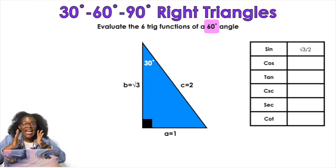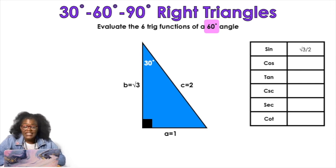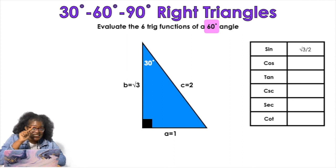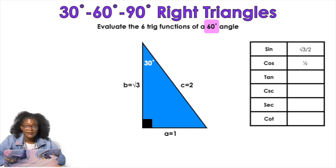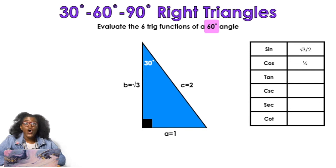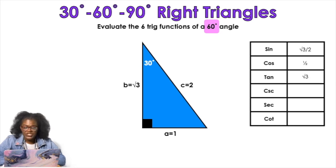Cosine uses CAH — adjacent over hypotenuse. Looking at the 60-degree angle, adjacent is 1 and hypotenuse is 2, so cosine is 1/2. For tangent using TOA — opposite over adjacent — looking at the 60-degree angle, opposite is square root of 3 and adjacent is 1, so tangent equals square root of 3 over 1, which is just the square root of 3.